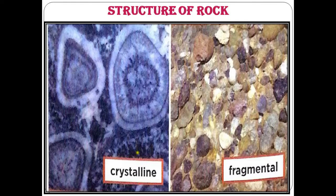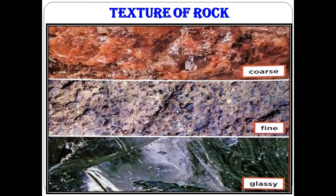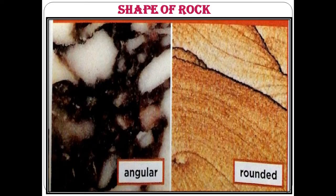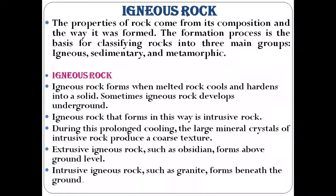Now let's see about the different structures and textures of rock. Here we can see the crystalline structure and the fragmental structure. For texture, some are coarse, some are fine, and some are glassy. For the shape of the rock, there is an angular shape and also a rounded shape.